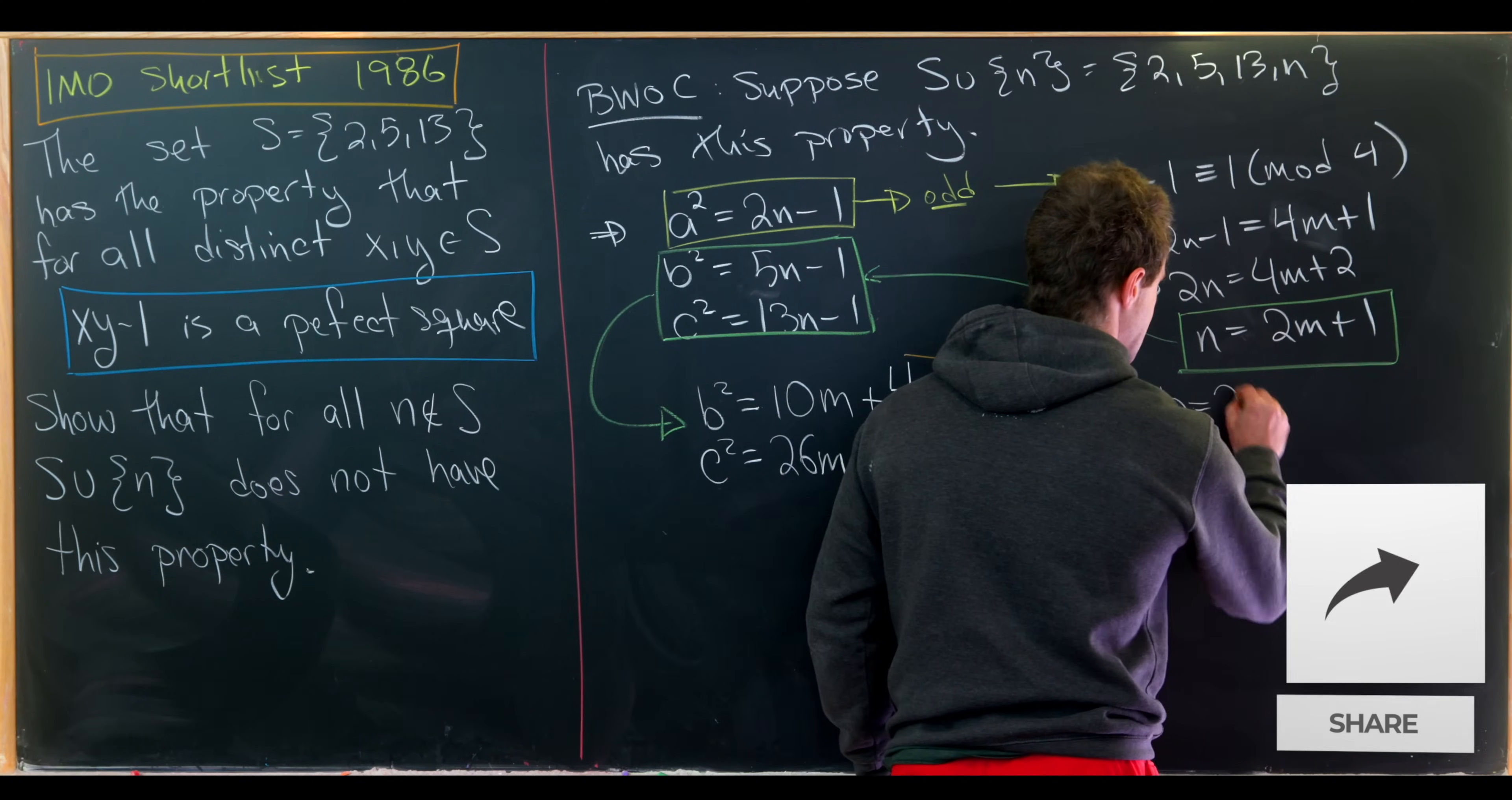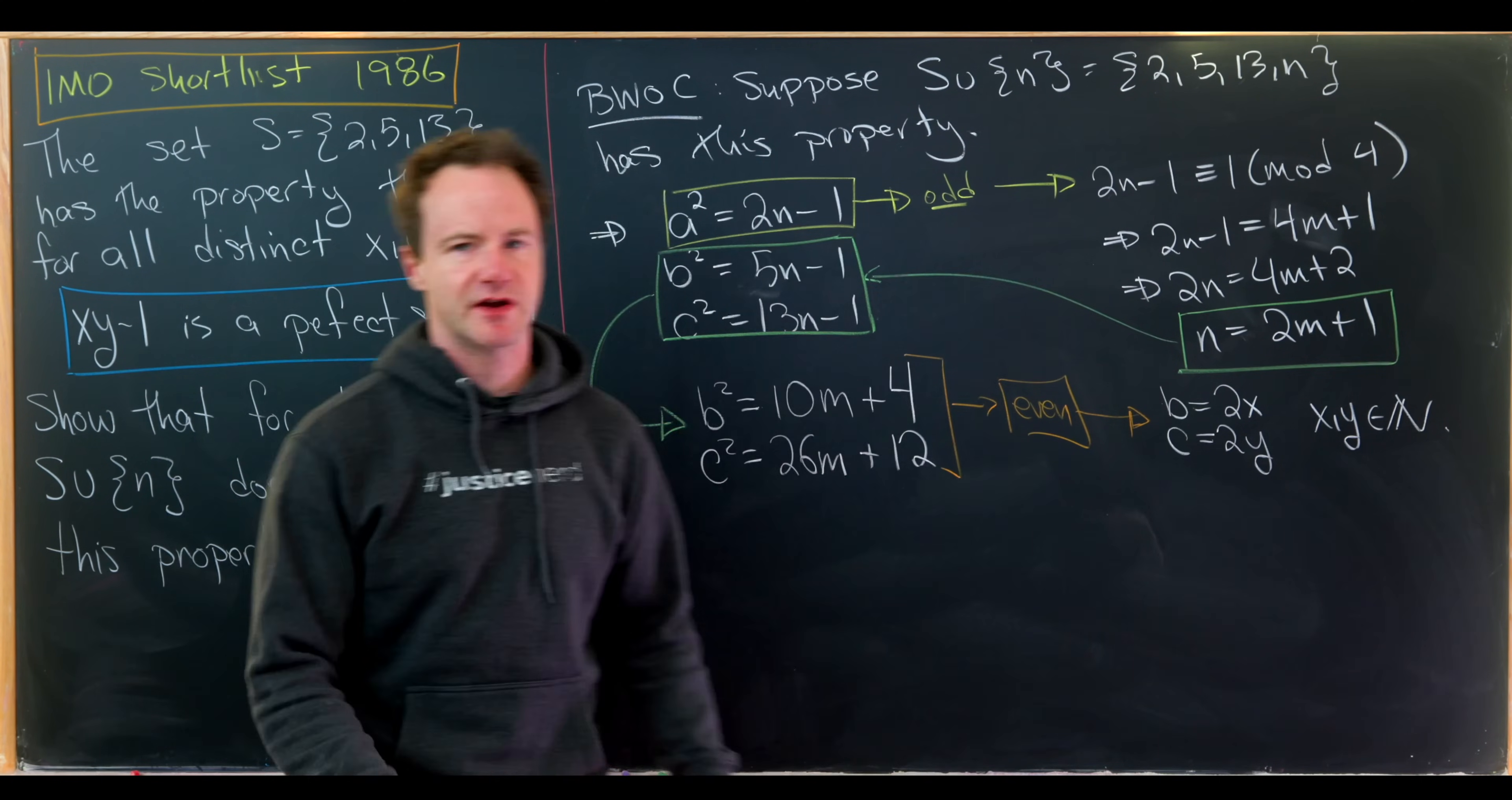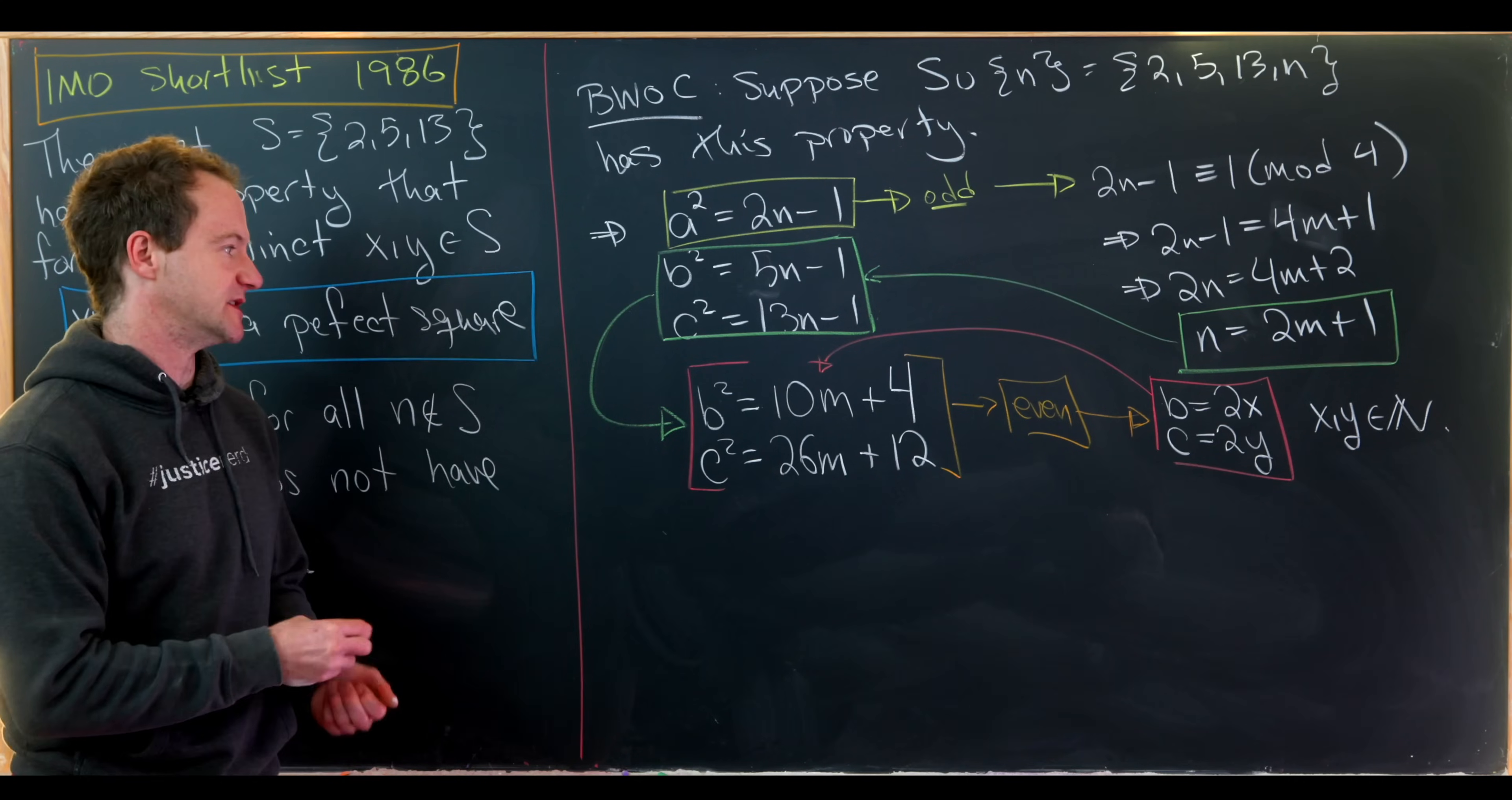So that means we can write b as 2 times x and c as 2 times y, where x and y are natural numbers. So let's be careful because this x and y are playing different roles than the x and y over here. So I'm reusing notation from how the problem is written, but I think that's okay. But next up, let's take this evenness of b and c and loop it back into our equations right here for b squared and c squared.